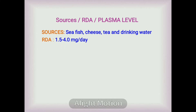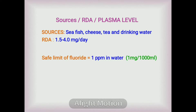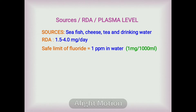The recommended daily allowance (RDA) for fluoride is 1.5 to 4 milligrams per day, while the safe limit is 1 ppm in water. Drinking water containing above 1 ppm fluoride raises concern regarding plasma levels of fluoride.